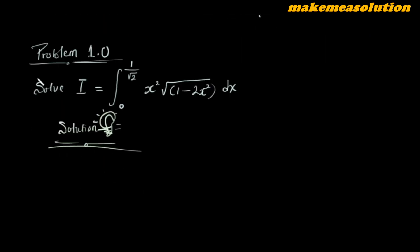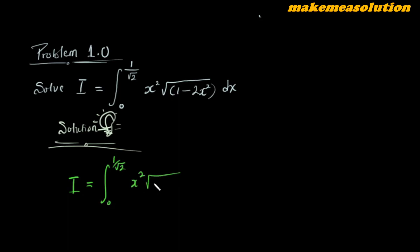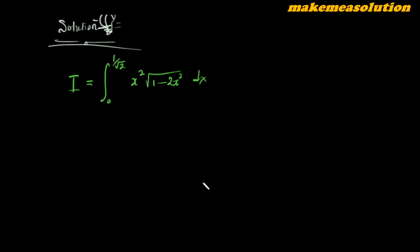Let's solve for the value of I. I is equal to the integral from 0 to 1 over root 2 of x squared times root(1 minus 2x squared) dx. So to solve this problem, here is how I'm going to tackle it.